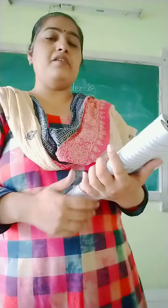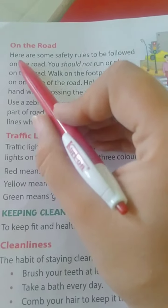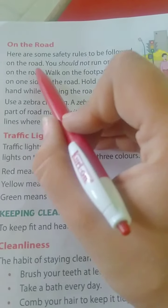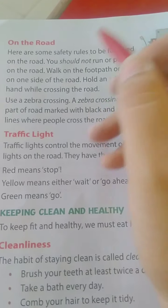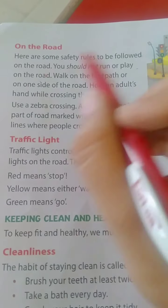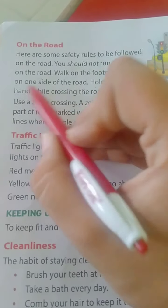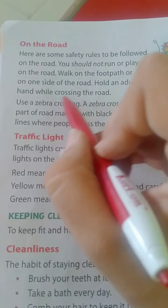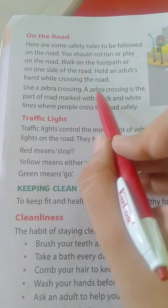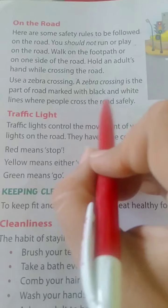On the Road. Here are some safety rules to be followed on the road. You should not run or play on the road. Walk on the footpath or on one side of the road. Hold an adult's hand while crossing the road. Use a zebra crossing — a zebra crossing is the part of the road marked with black and white lines where people cross the road safely.